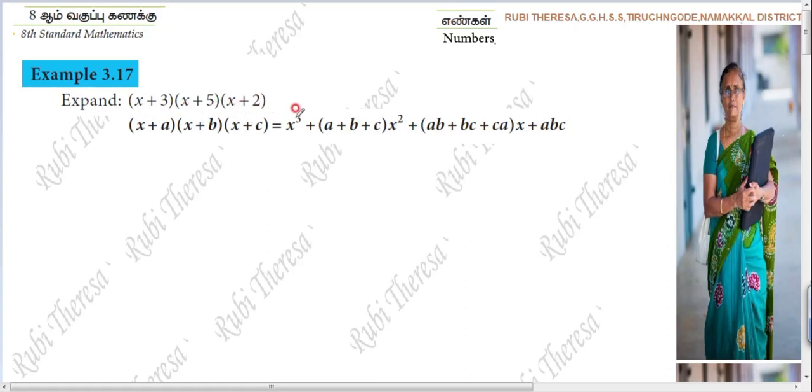Equal to x cube plus A plus B plus C into x square. A plus B plus C into x square. Plus AB plus BC plus CA into x. Plus ABC.